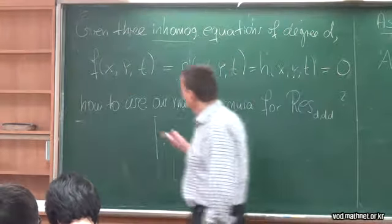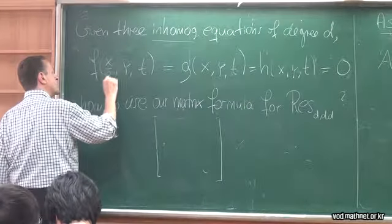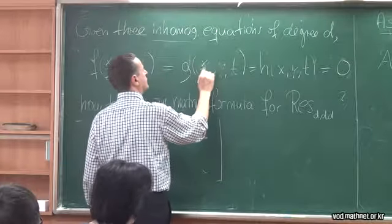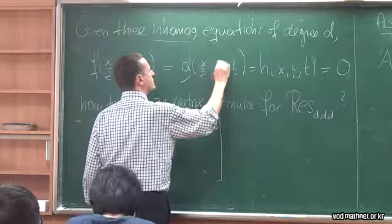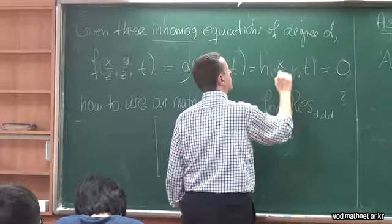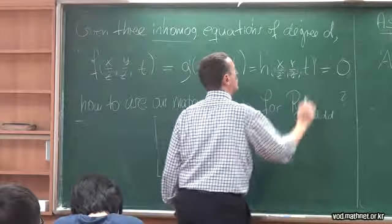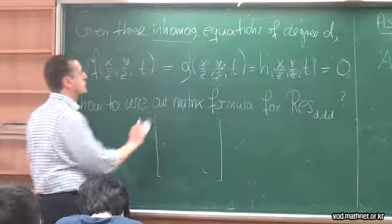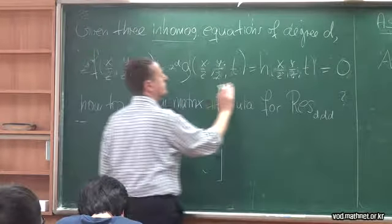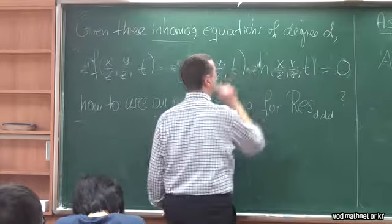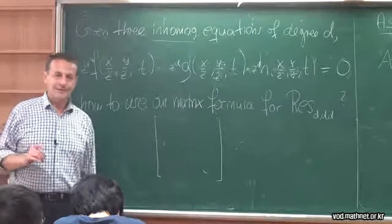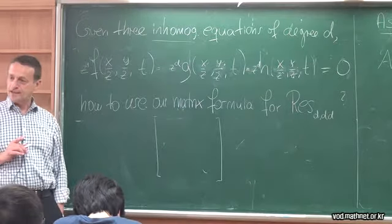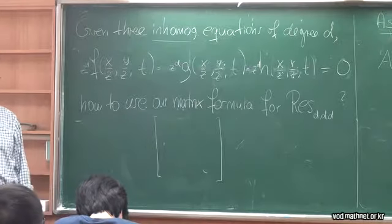To homogenize, we are homogenizing x and y by dividing by a new variable z — so x over z, y over z. Of course we want these to be polynomials, so we have to multiply by z to the d. At this point we have three homogeneous equations in x, y, and z whose coefficients depend on t.